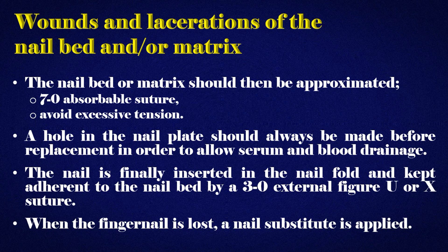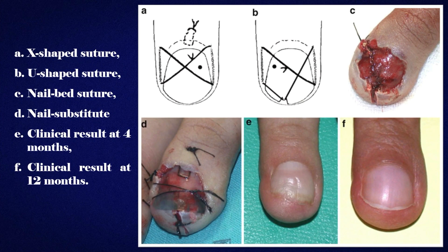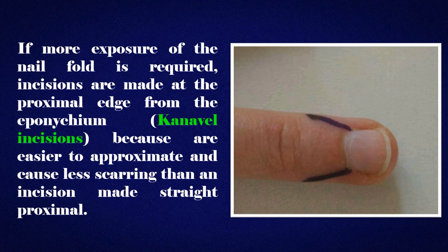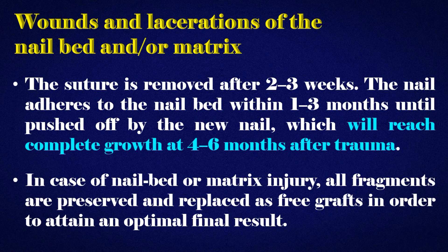When the fingernail is lost, a nail substitute is applied. If more exposure of the nail fold is required, incisions are made at the proximal edge from the eponychium — caw navel incisions — because they are easier to approximate and cause less scarring than an incision made straight proximal. The suture is removed after 2–3 weeks. The nail adheres to the nail bed within 1–3 months until pushed off by the new nail, which will reach complete growth at 4–6 months after trauma.